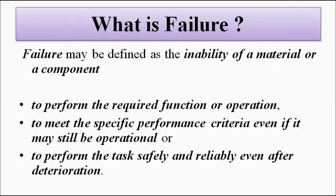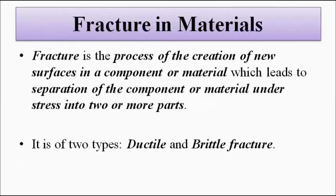Everything exposed to stress will undergo strain, and when a material is subjected to extreme stress it undergoes fracture. Fracture in materials is basically the process of creation of new surfaces on the material or component, which leads to separation of the intact material into two or more parts. Fracture basically happens in two ways — it is of two types: ductile and brittle fracture.